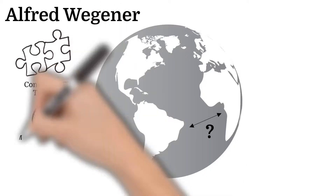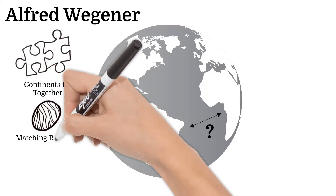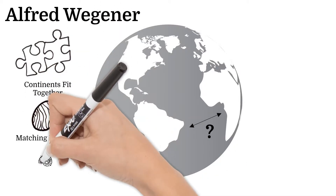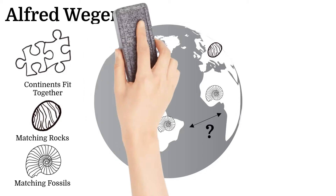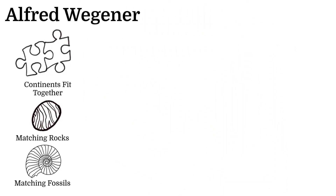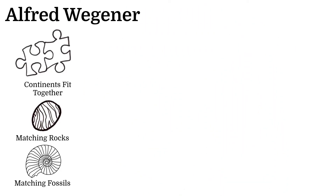Besides the shape of the continents, matching rock and fossils were found on opposite sides of the ocean. Wegener hypothesized all the continents were once joined together and have slowly drifted apart. He named the original landmass Pangaea, which means all lands.